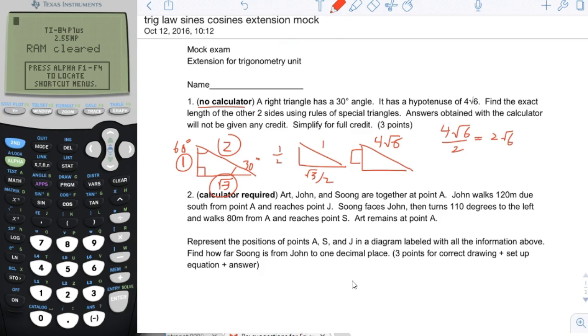The longer leg here, you can get from the shorter side by multiplying by square root of 3. So I could take 2 square root of 6 and multiply by square root of 3, and that will give me 2 square root of 18.